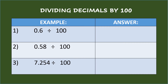Dividing decimals by one hundred. First example: six-tenths divided by one hundred. Take note that the divisor has two zeros, so move the decimal point of the dividend two places to the left and put a zero to fill in the vacant place. So the answer is six-thousandths.